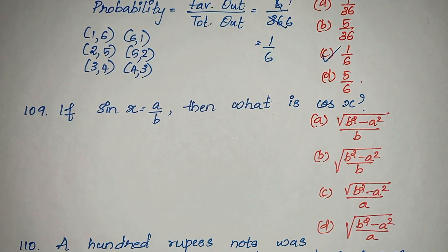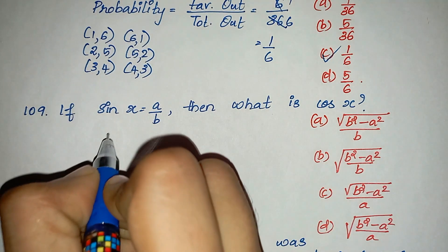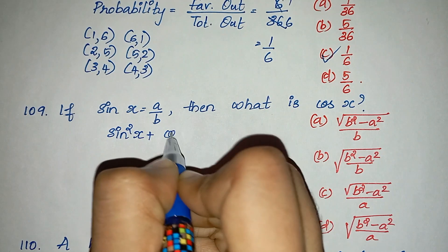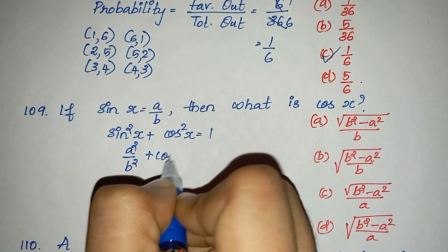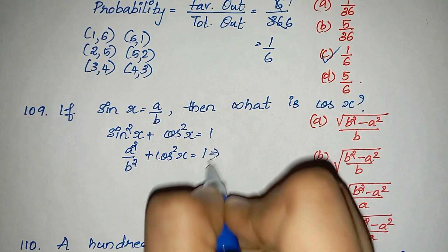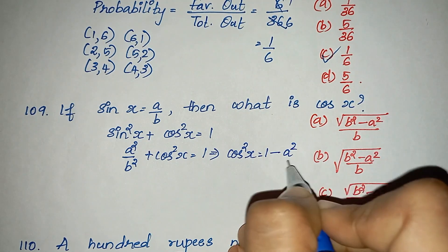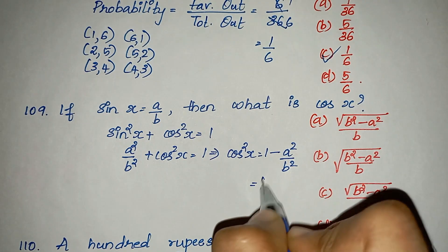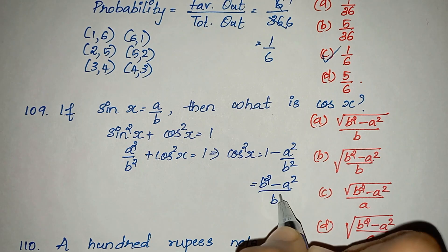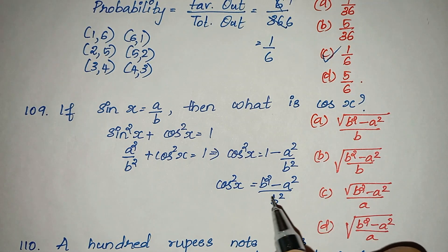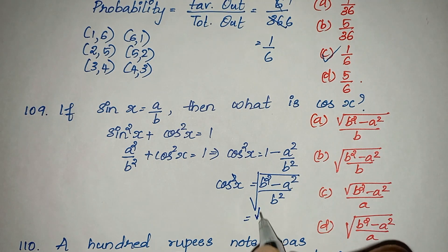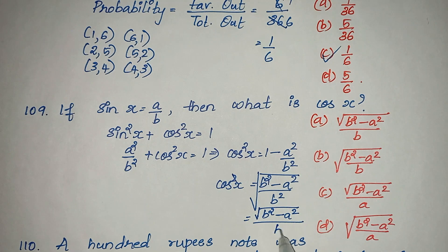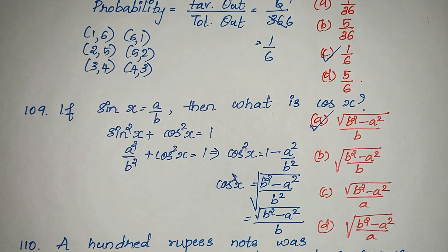Question 109: if sin x equals a by b, find cos x. Using the relation sin square x plus cos square x equals 1, sin square x equals a square by b square. So cos square x equals 1 minus a square by b square, which is b square minus a square by b square. Therefore cos x equals root of (b square minus a square) divided by b. Option A is the correct answer.